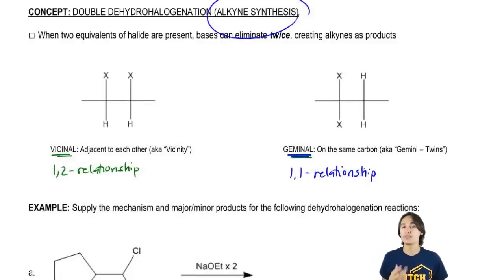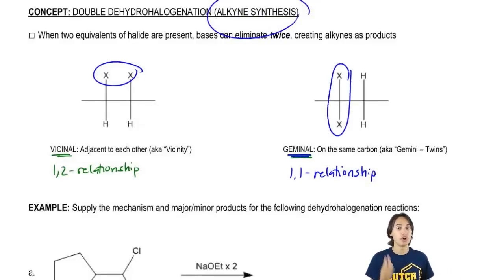Regardless, both of these different types of dihalides, whether you're talking about that they're next to each other or whether you're talking about that they're on the same carbon, both of them are going to be open to this type of attack called double dehydrohalogenation.